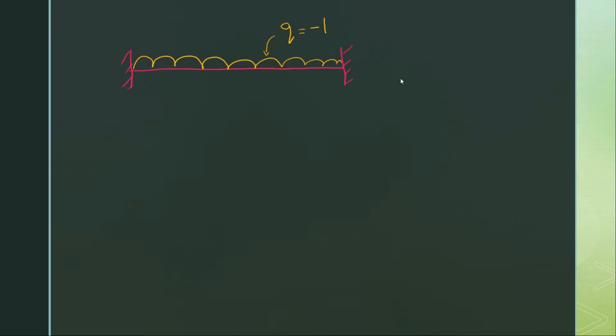Since the load is uniformly distributed, there are no changes in loading location, so we will just choose two points: one node at the left support and the second node at the right support. Minimum two nodes are required. In MATLAB or in Abaqus we will choose these two points to make the fixed beam, and the span length we choose as 1000.